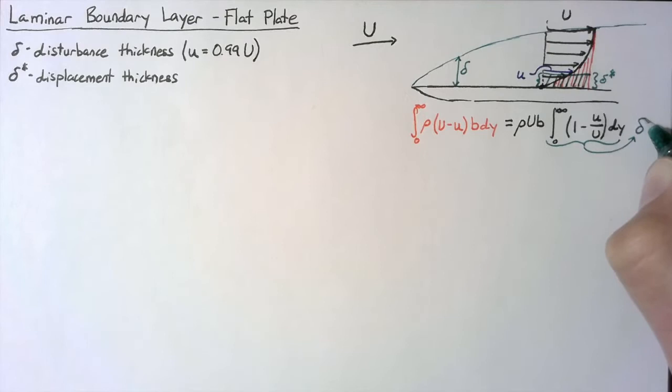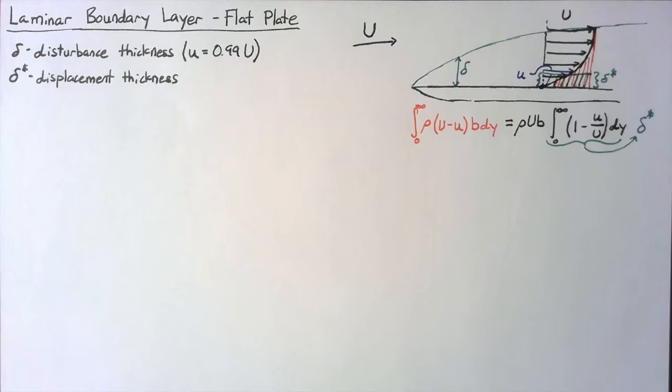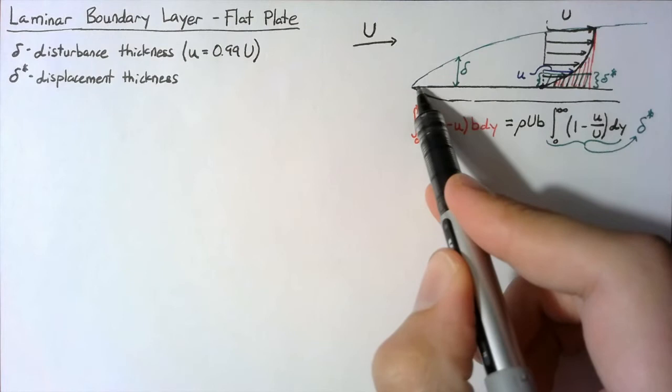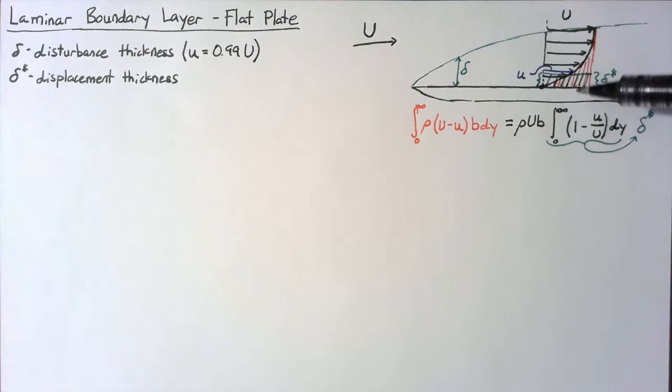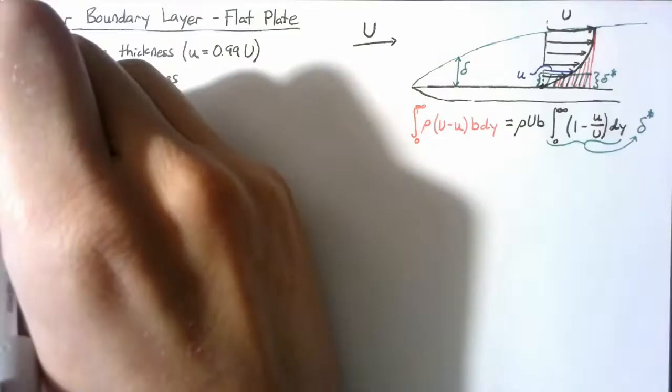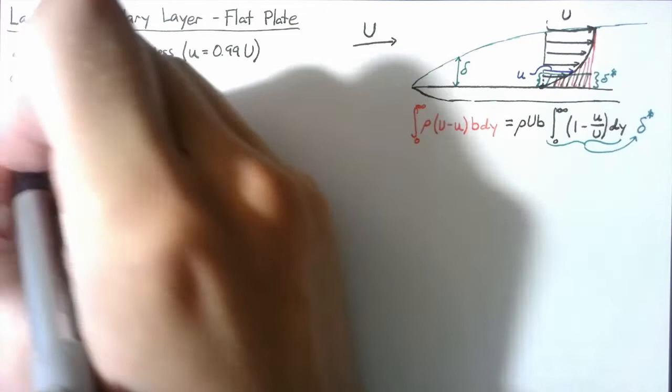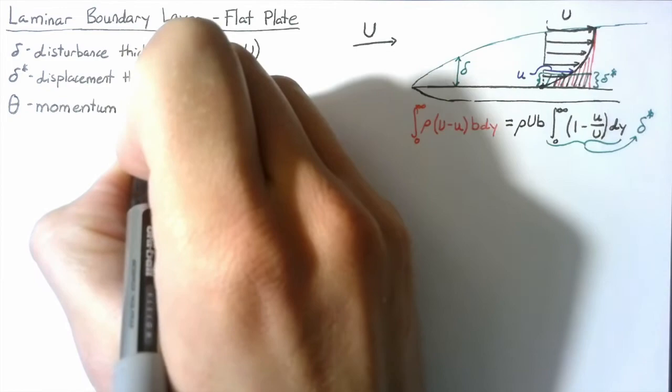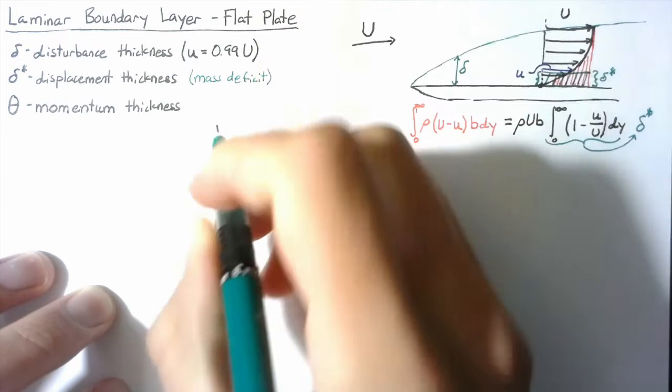Once again, this displacement thickness refers to the mass deficit that we find due to our boundary layer. It's called the displacement thickness because if we had ideal flow that tried to mirror this boundary layer, then the thickness of our plate would have to increase just a little bit in order to account for the mass that we're losing. The last thickness we're going to talk about is called the momentum thickness, and we usually use theta as its name. So if delta star was the mass deficit, theta is going to be the momentum deficit.